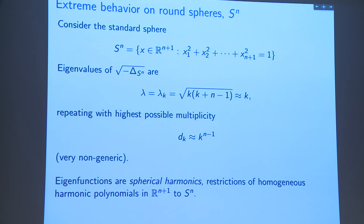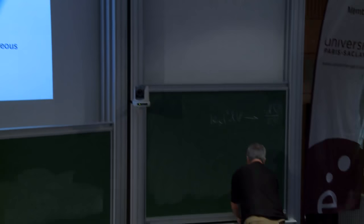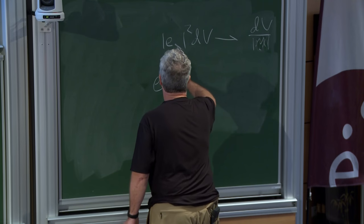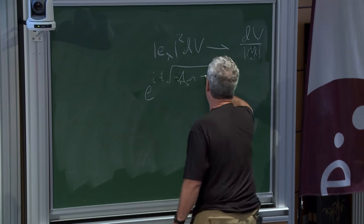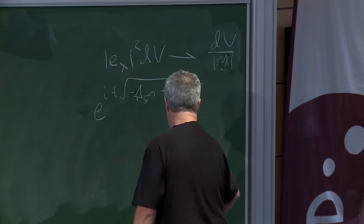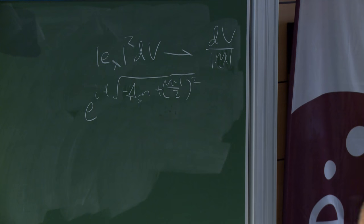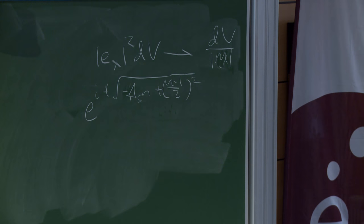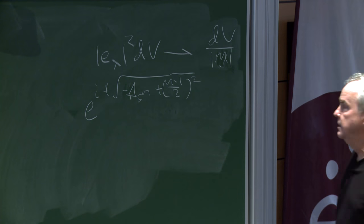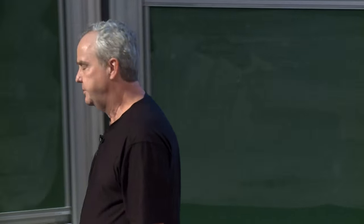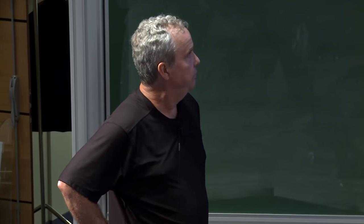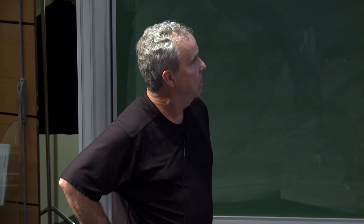If you take the half-wave groups — completing the square — they are periodic, either with period 2π in the case of n odd or 4π in the case of n even. The periodicity of these half-wave operators accounts for the bad behavior of the eigenfunctions. The eigenfunctions are nothing but the spherical harmonics, which are restrictions of homogeneous harmonic polynomials in R^{n+1} to the n-sphere.